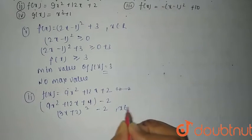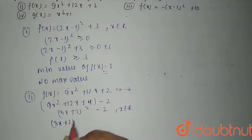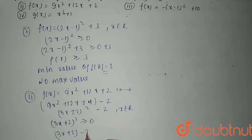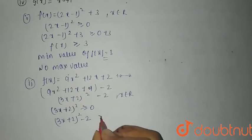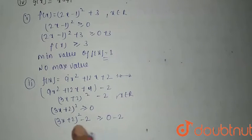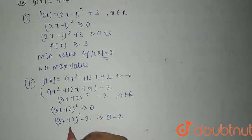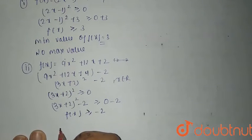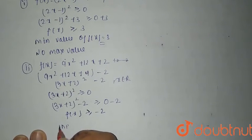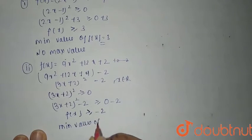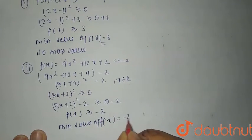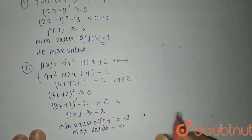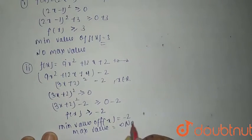For each x belonging to R, (3x + 2)² is greater than or equal to 0. So (3x + 2)² - 2 is greater than or equal to 0 - 2, that means subtracting 2 from both sides. So f(x) is always greater than or equal to -2. Therefore the minimum value of f(x) is -2, and again no maximum value because it goes to infinity.